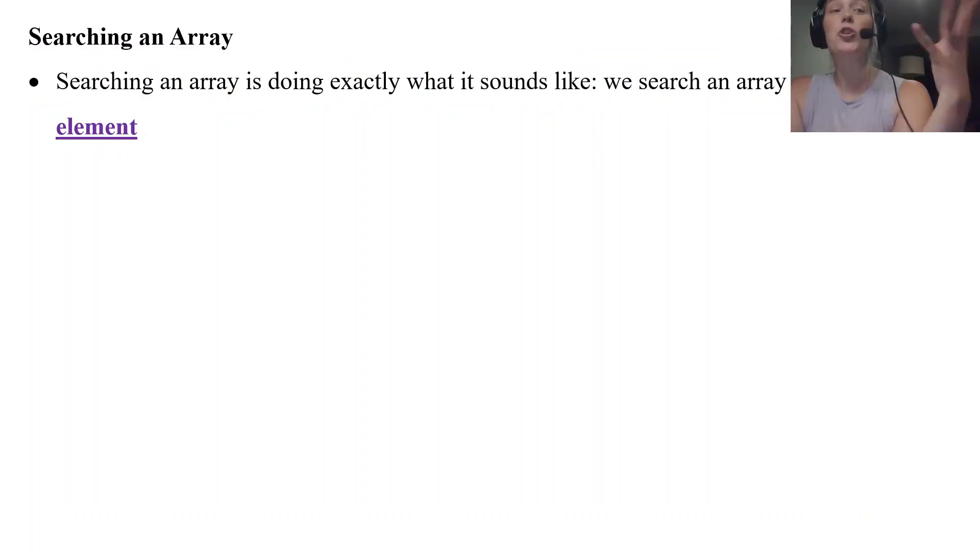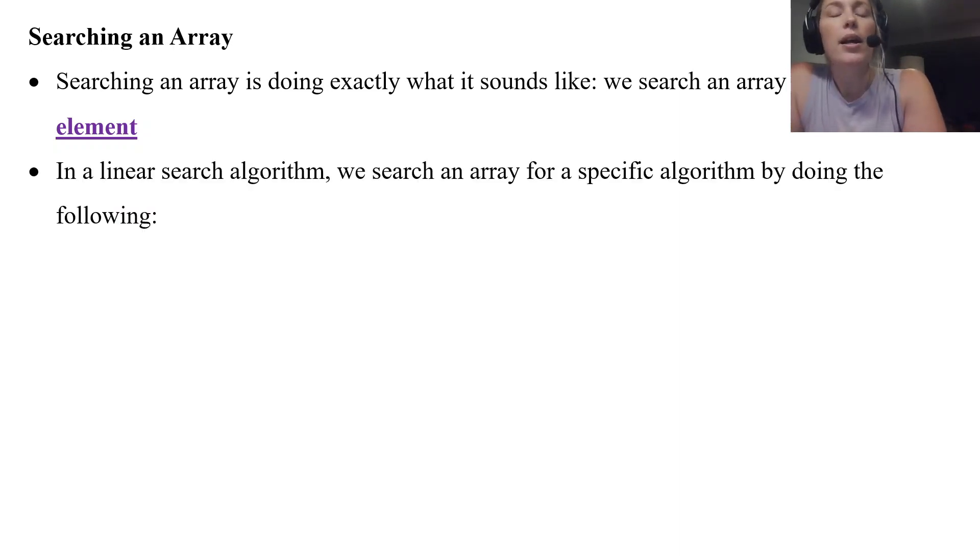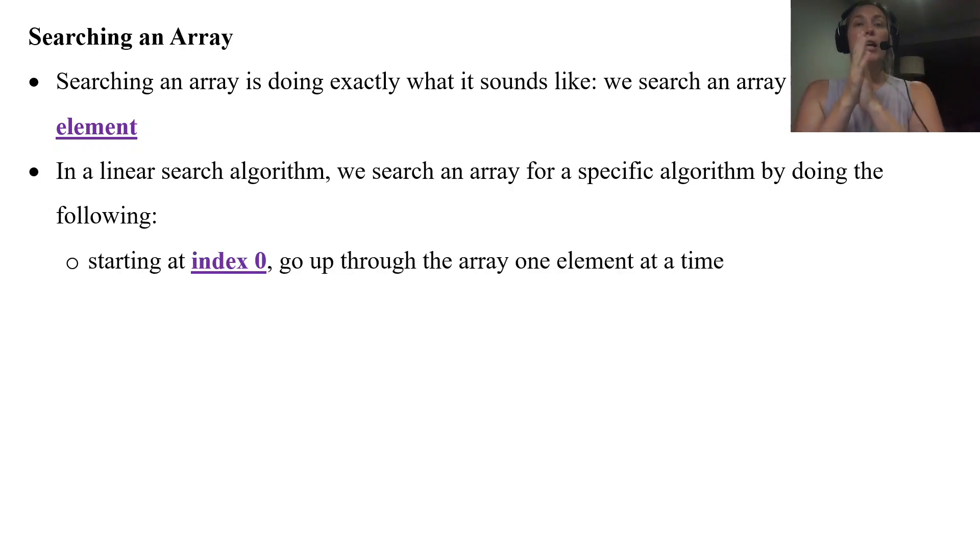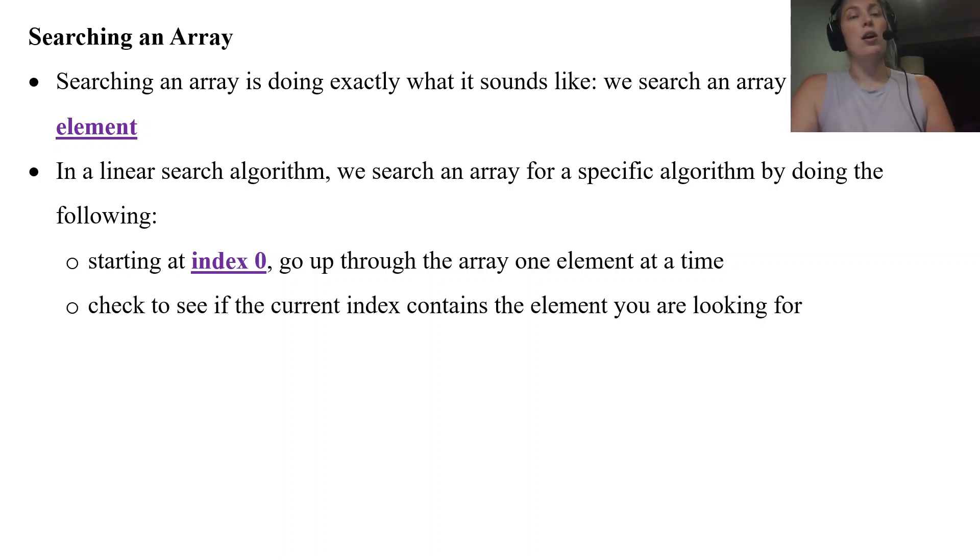So searching an array—what is it? It's hopefully obvious what it's going to be doing. You're searching an array for something, specifically for an element of some kind. In a linear search algorithm, we search the array for a specific element by doing the following. We start at index 0 and we go up through the array one element at a time. We check to see if the current index, whatever the current index we're at, is if that element is what we're looking for.